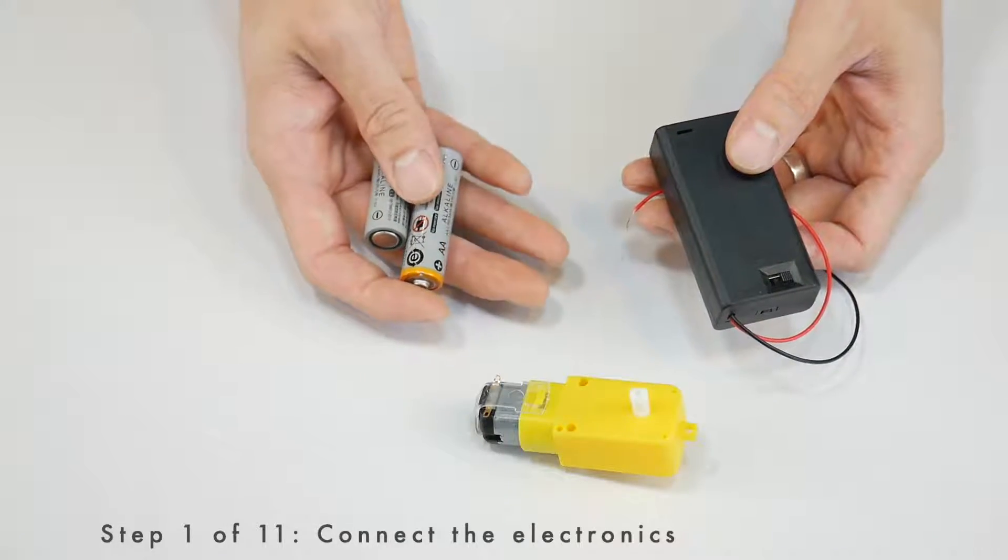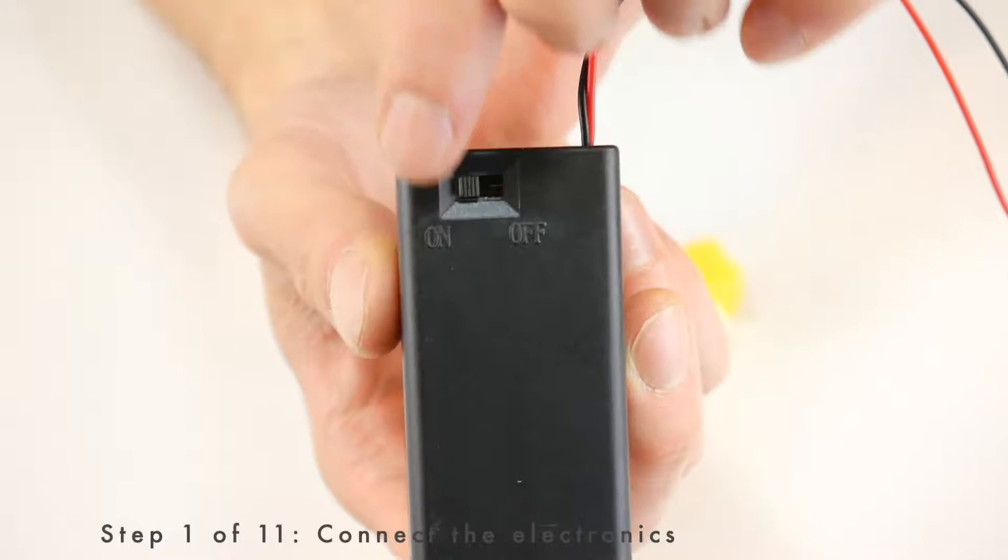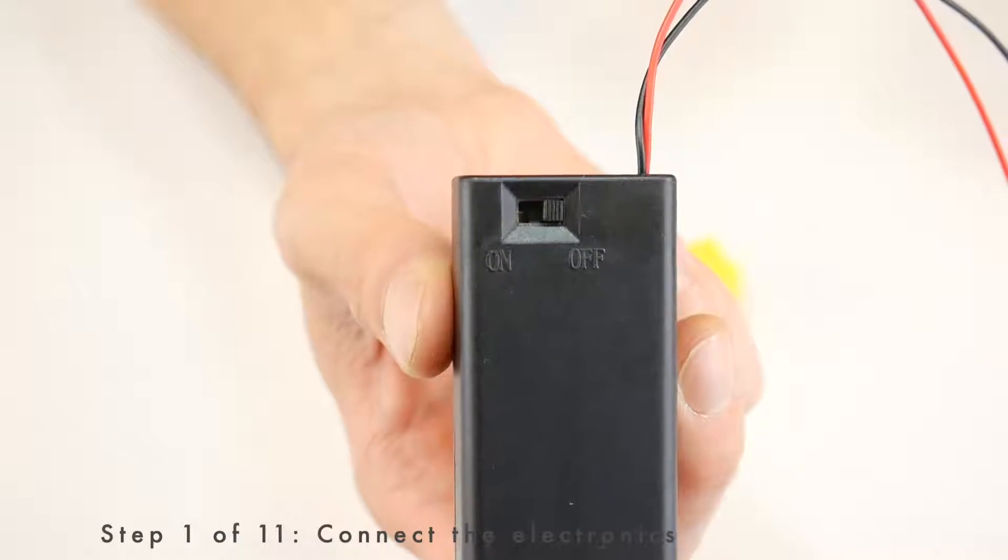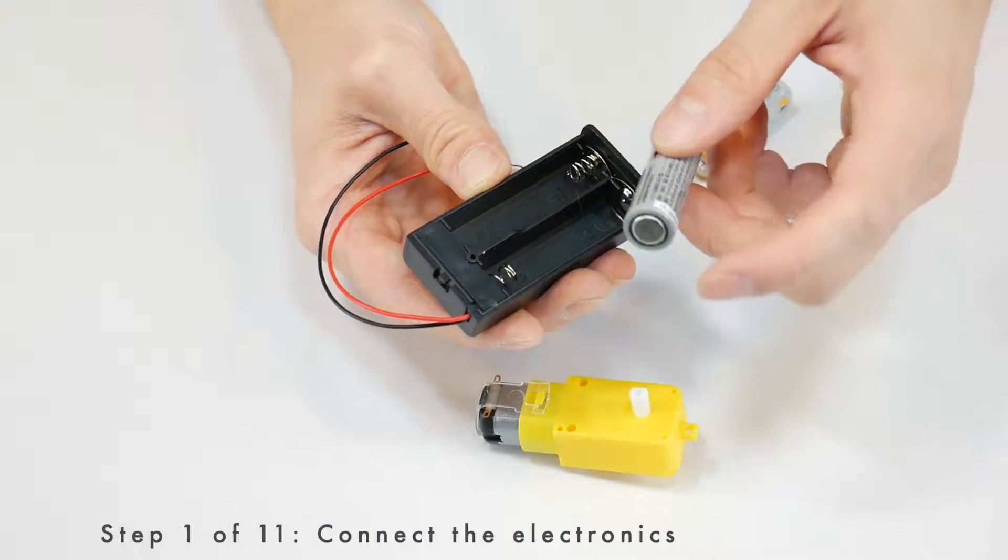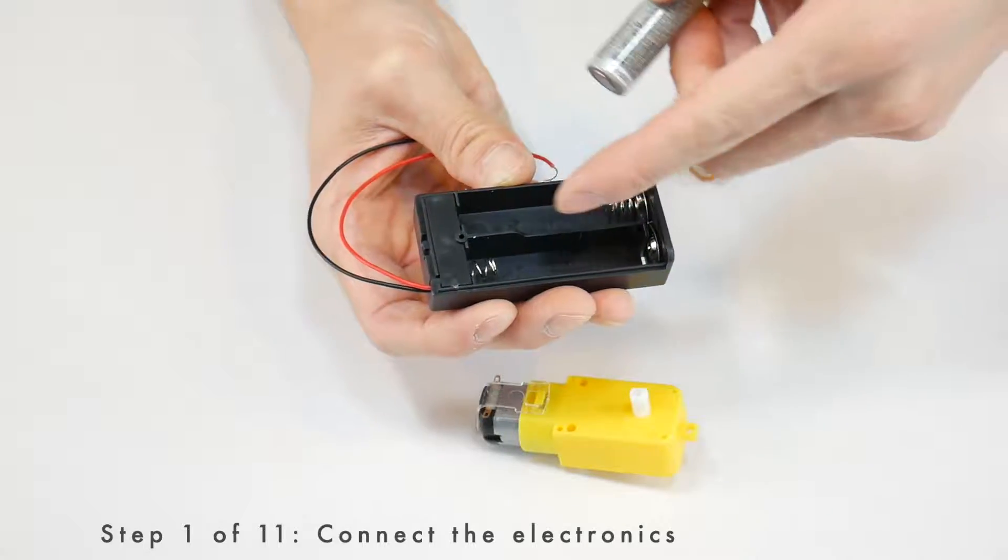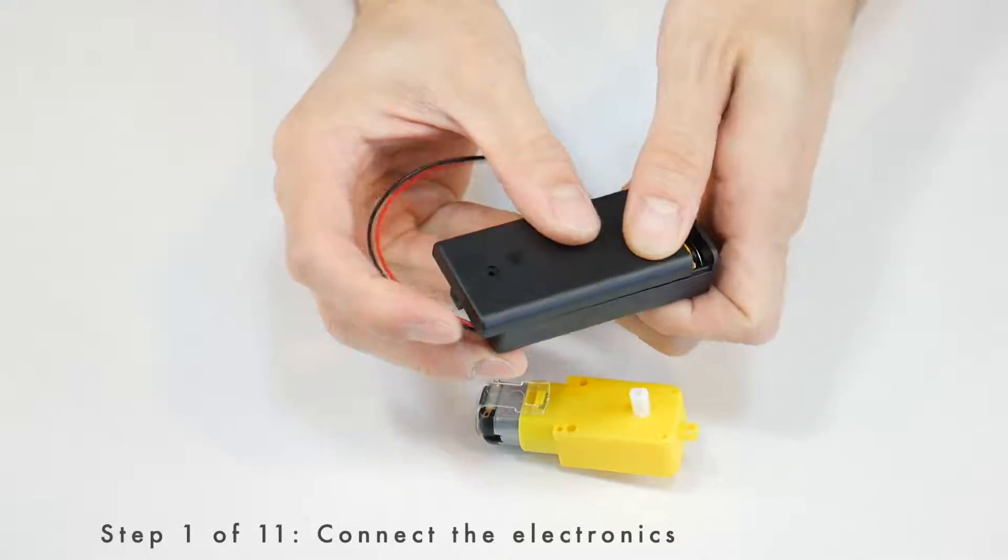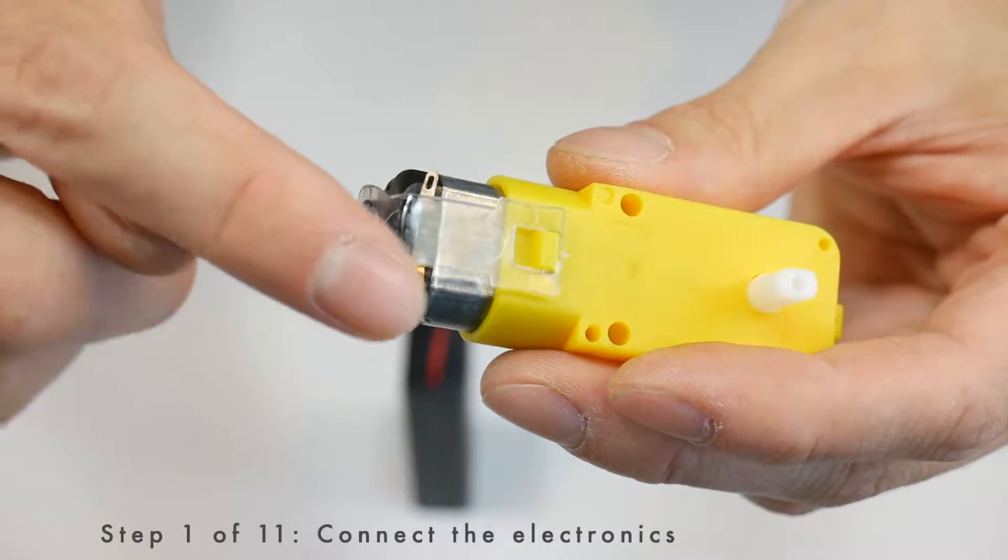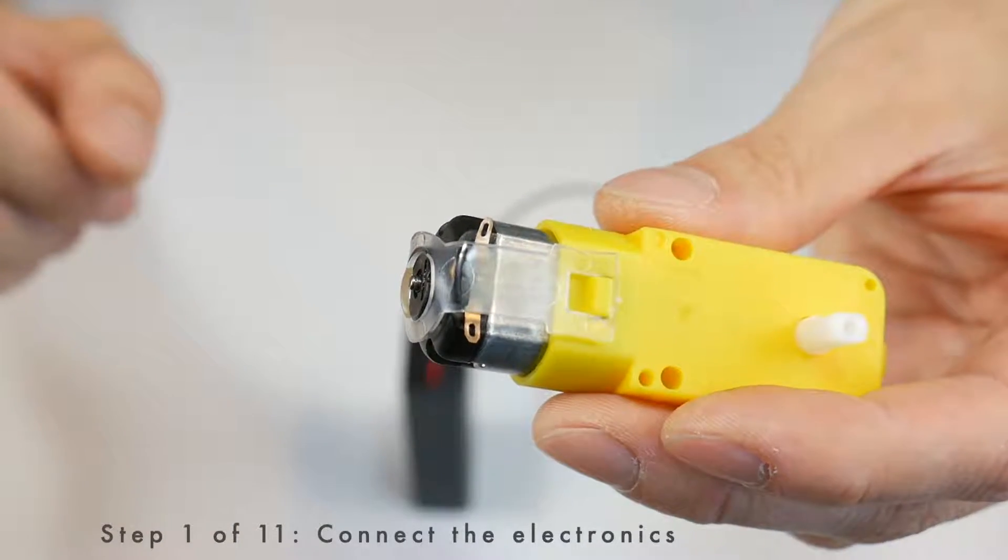The first step is to wire up the battery holder to the motor. Make sure to turn the battery holder off so you don't accidentally create a short circuit by crossing the wires. Open up the battery holder and install the batteries so the flat side is touching the spring. The motors have two metal tabs on them that have holes and we're going to use those to connect the battery holder.